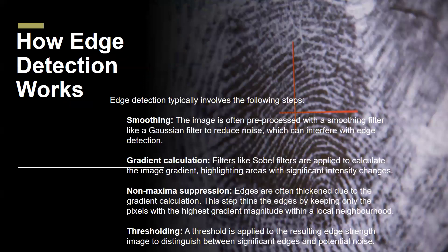How does edge detection actually work? The edge detection algorithm typically follows a series of steps to effectively identify edges. The initial step often involves smoothing the image to remove noise, which can lead to false edge detection. Then gradient filters are applied to calculate the rate of change in intensity, highlighting potential edge locations.